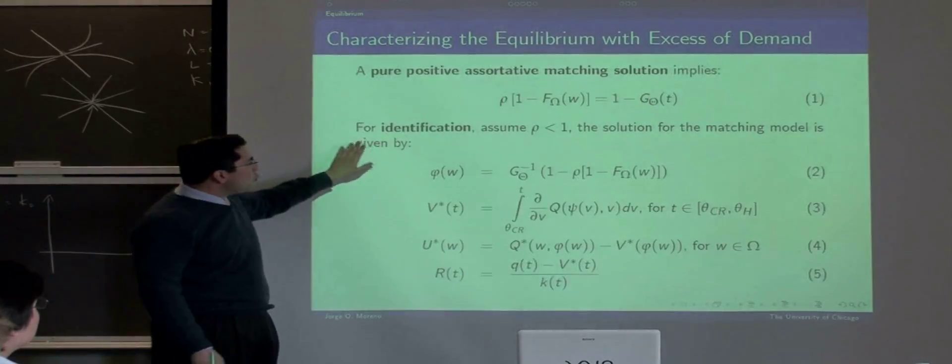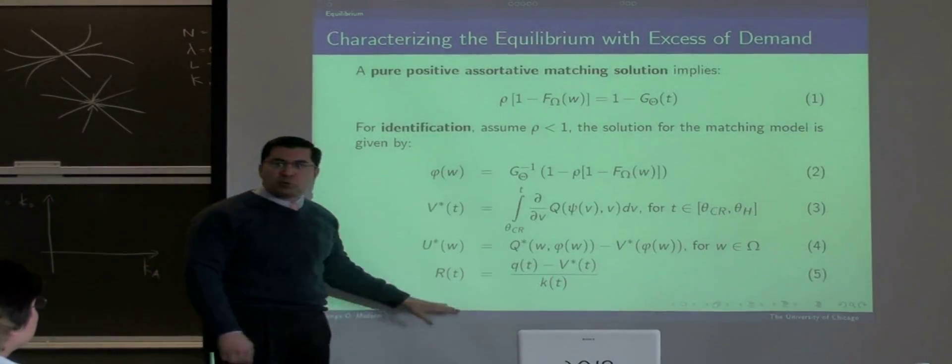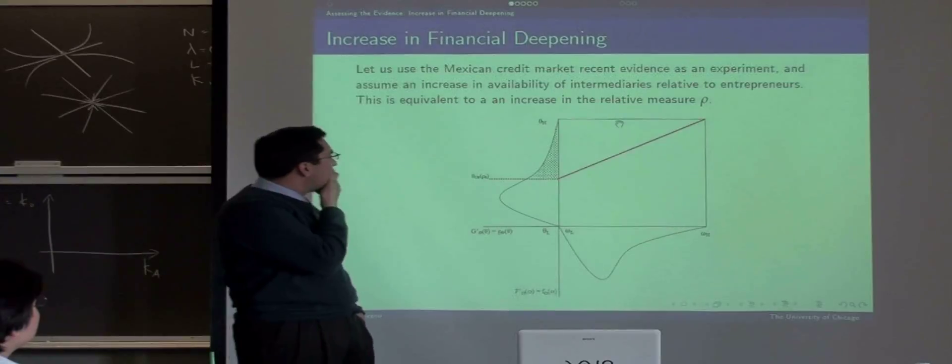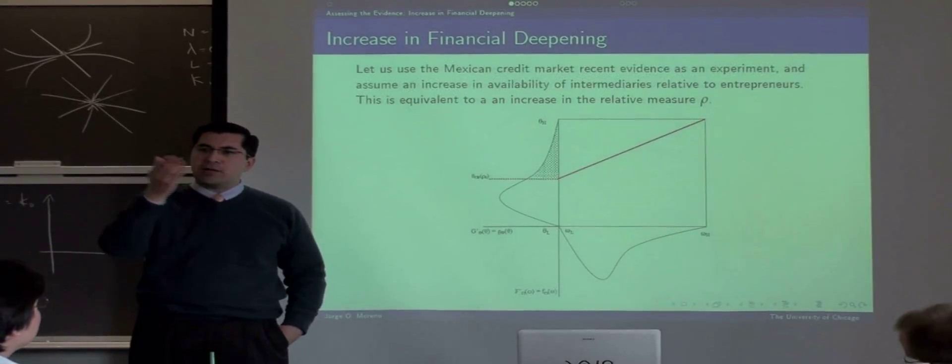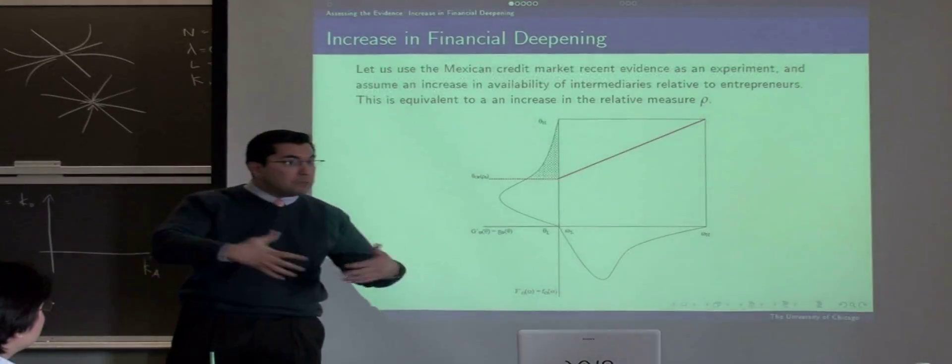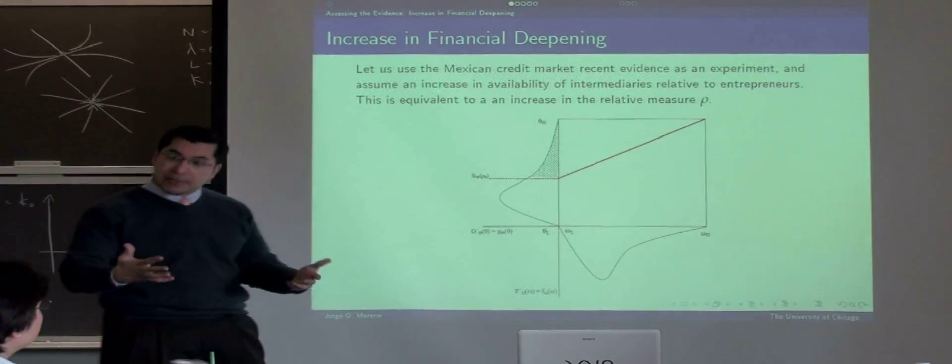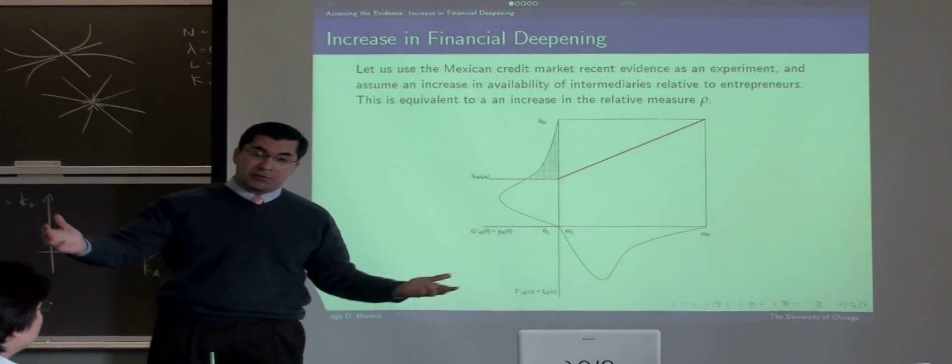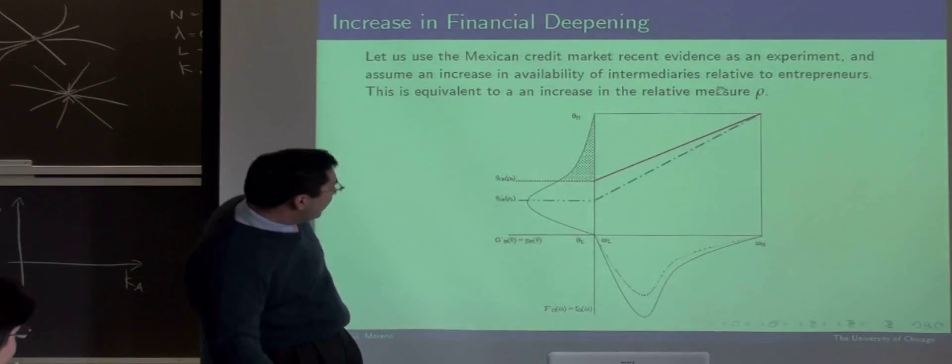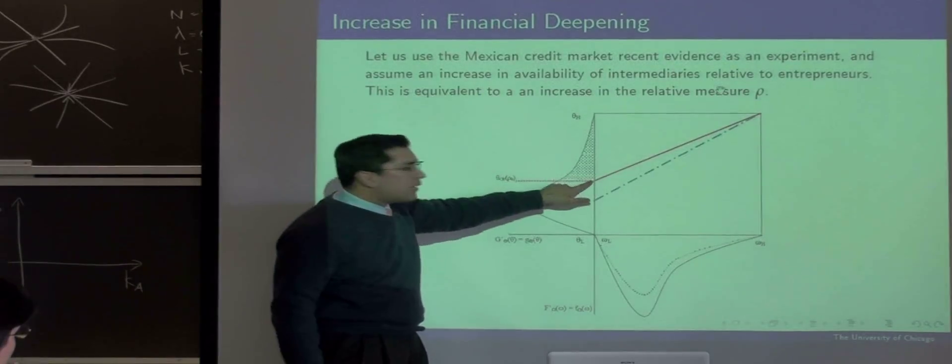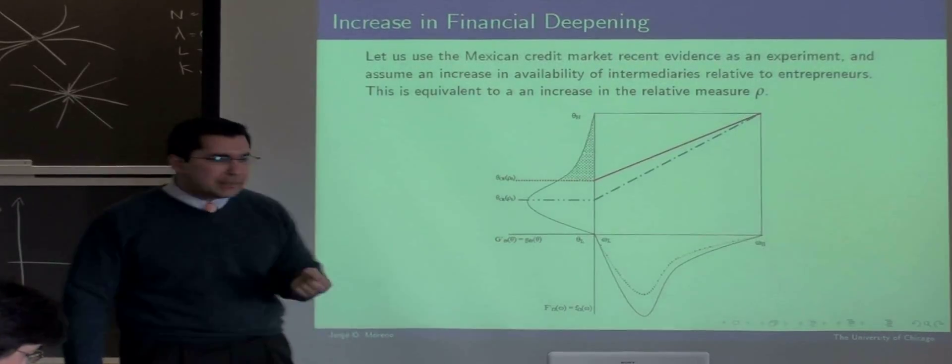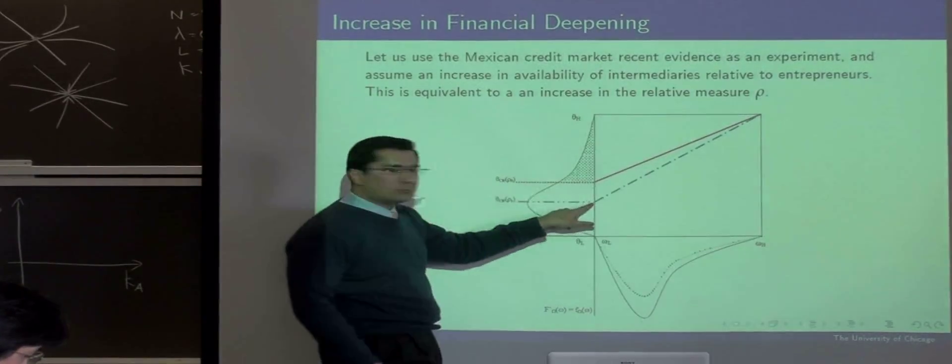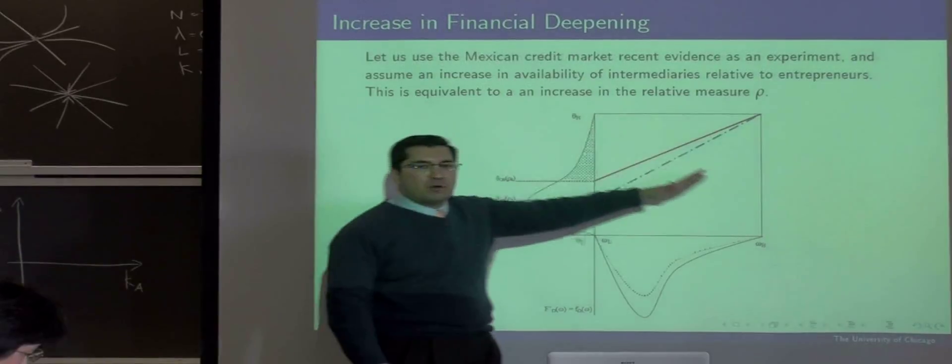Then the solution of the model will be given by these four equations. Let us introduce an exogenous change in rho, which is what I observed in Mexico. Suddenly, starting 2006, the banking activity increases. What is important is that the critical value, which is the last entrepreneur in getting credit, goes down. So, the whole matching function modifies.